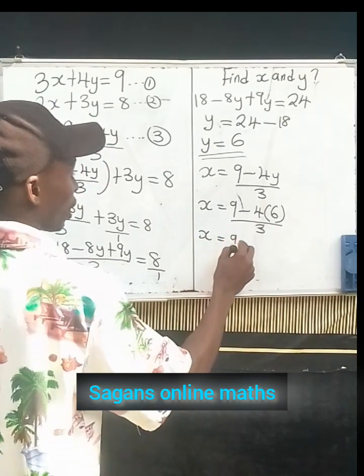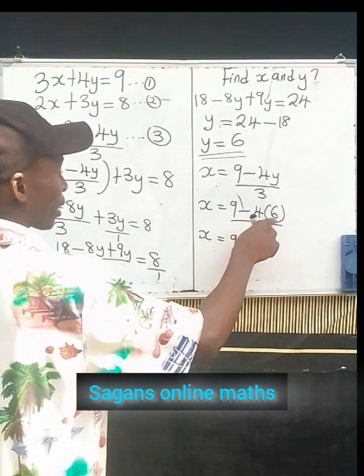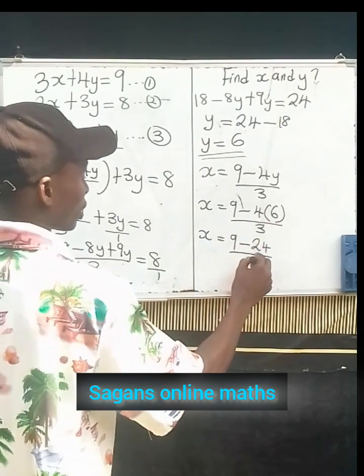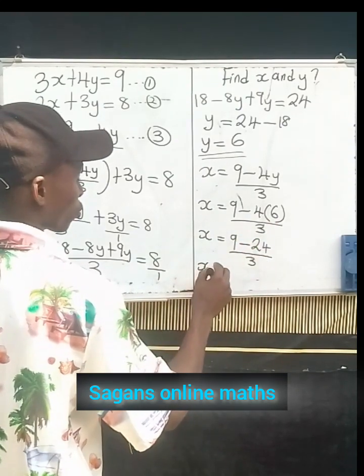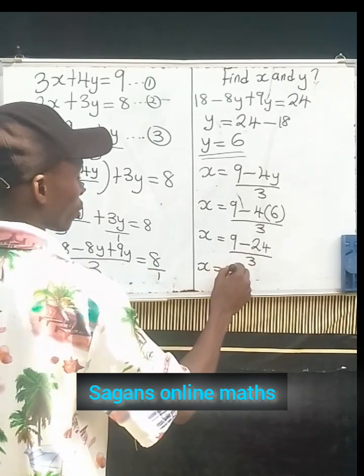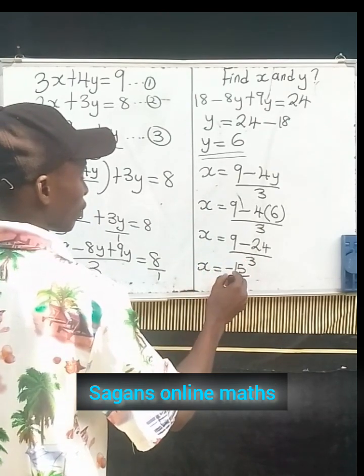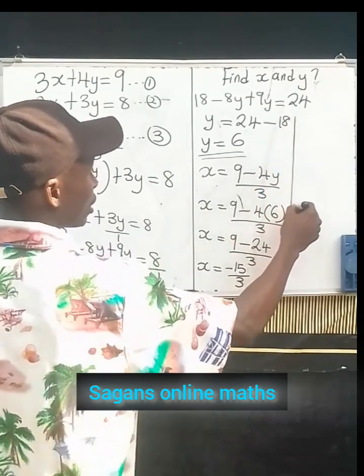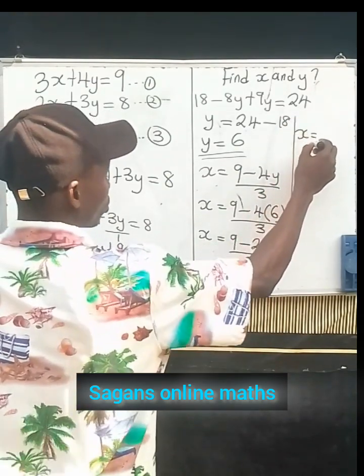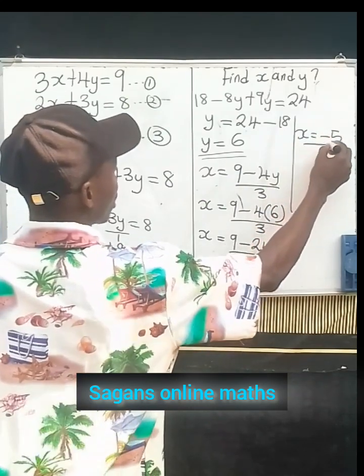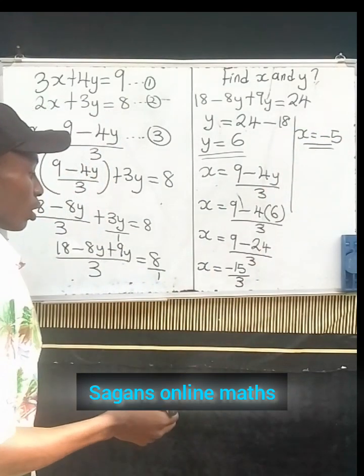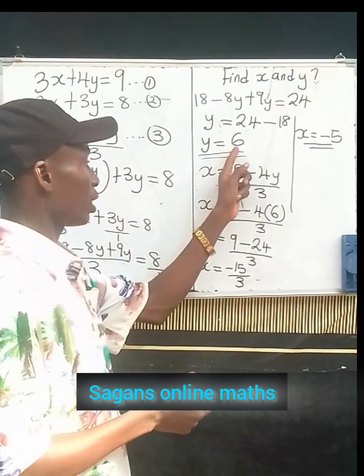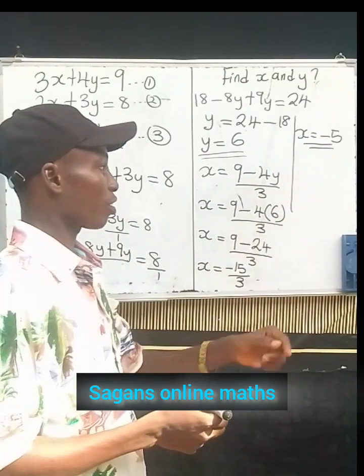That means our x equals to 9 - 4 times 6 divided by 3, and x equals to 9 - 24 divided by 3, and x equals to -15 divided by 3. Now we see that our x equals to -5. This is the clear solution to this particular problem.